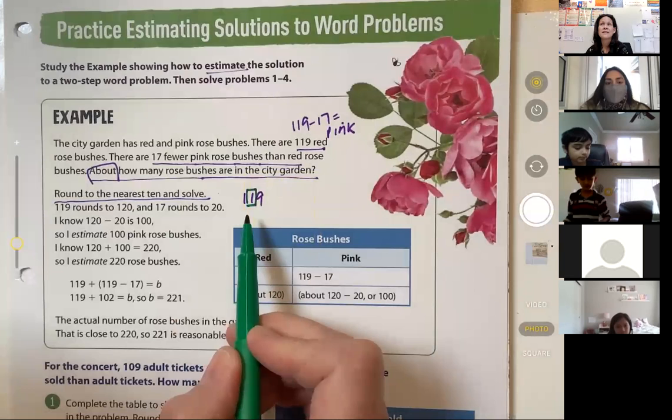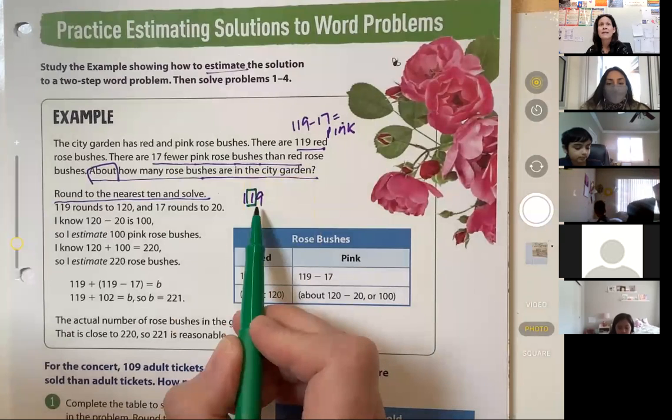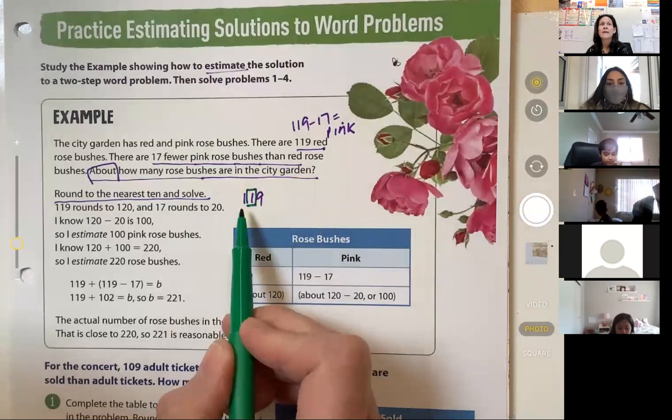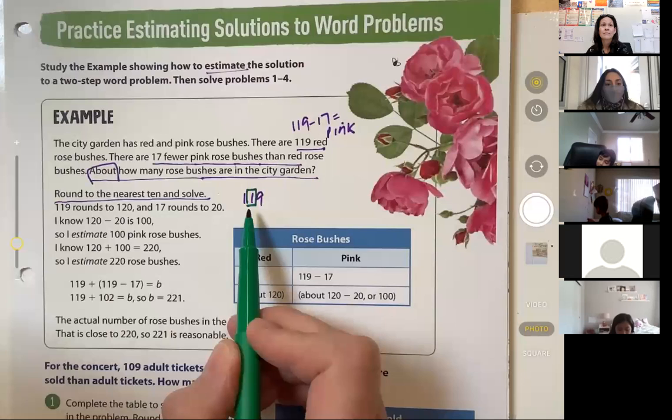Please review it. If this is a challenge for you during independent work time, stop. Go back and review place value. The ones place, the 10s place, the 100s place. We are rounding to the nearest 10. Identify the place. That's step number one.